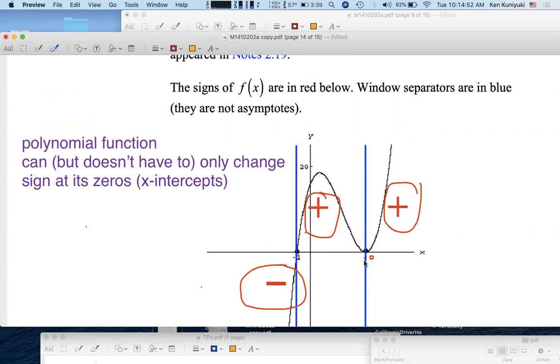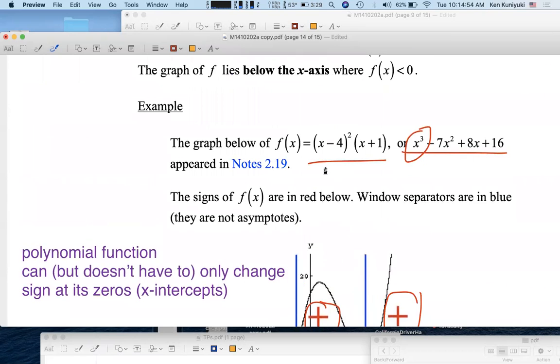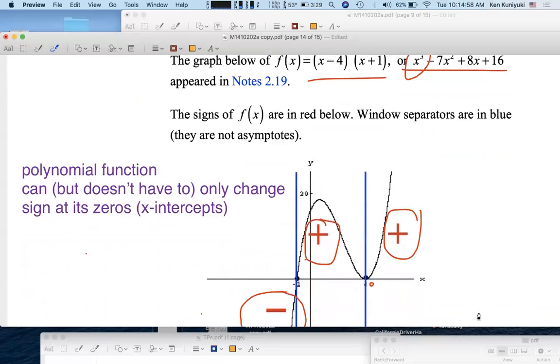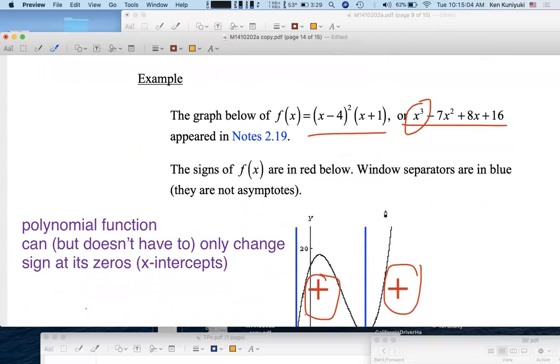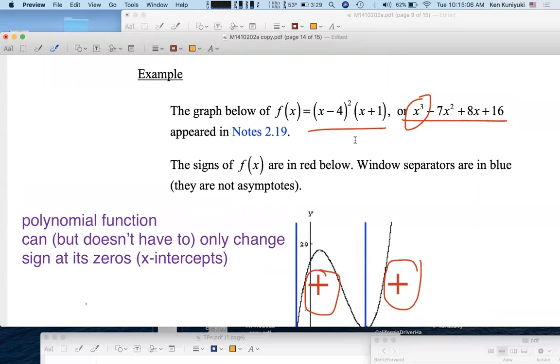So if you know what the leading term is, and if you know the complete factorization over the reals, then you should be able to know where the function is positive versus negative. And of course, it's zero at the real zeros, the x-intercepts.